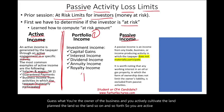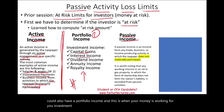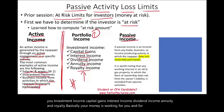We could also have portfolio income, and this is when your money is working for you — investment income, capital gains, interest income, dividend income, annuity, and royalty. Basically, your money is working for you in the form of investment. That's called portfolio income.